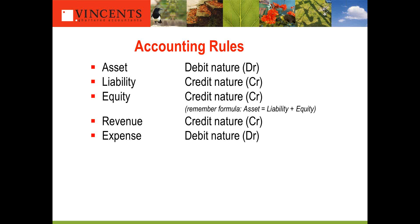Some people get confused that assets have a debit nature. The accounting document that non-accountants most commonly receive is a bank statement. If you've got a savings account, when you get your statement from the bank it shows $100 with a little CR beside it. So your asset — your savings account — appears as a credit. The answer is it's the bank's statement, and for them it's a liability, which is why it's a credit. Similarly, your mortgage bank statements always show a DR, because it's your liability but the bank's asset.